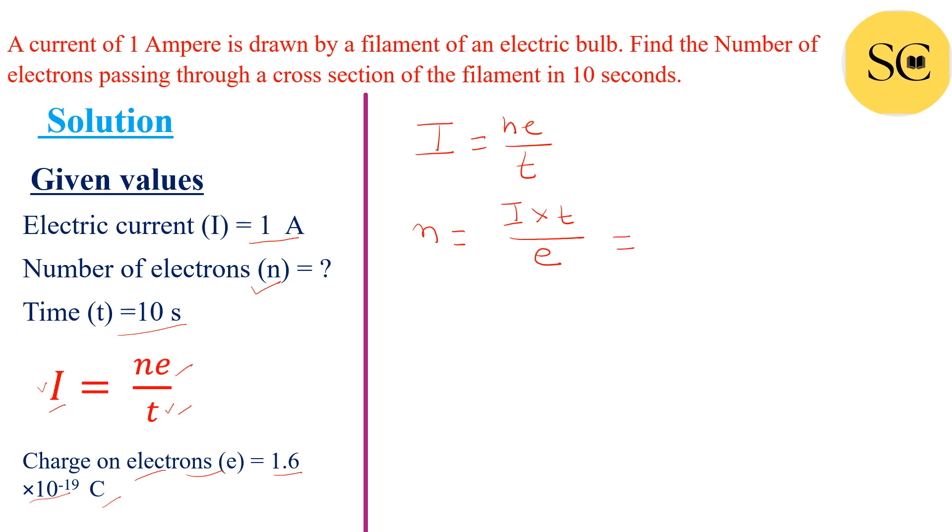Value of I is 1, t is 10, and e is 1.6 × 10^-19 coulombs. So n = (1 × 10)/(1.6 × 10^-19). Now divide 10 by 1.6.